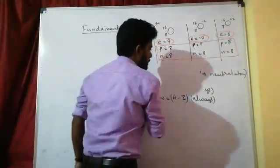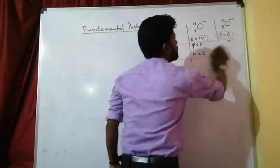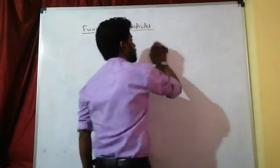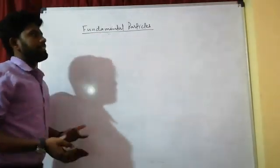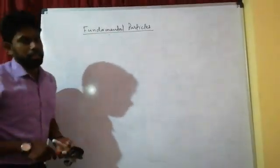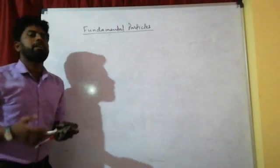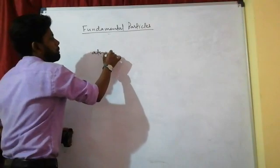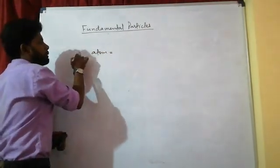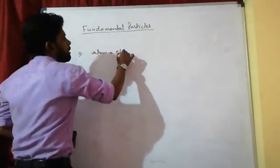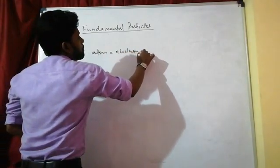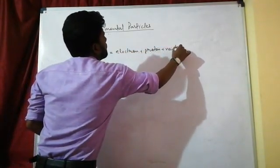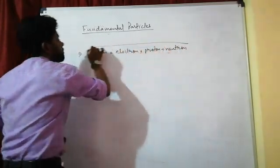Now we move to particles. What are fundamental particles? Basically, atoms are made of electrons, protons, and neutrons. The fundamental particles of an atom are electrons, protons, and neutrons. These are the fundamental particles of an atom.